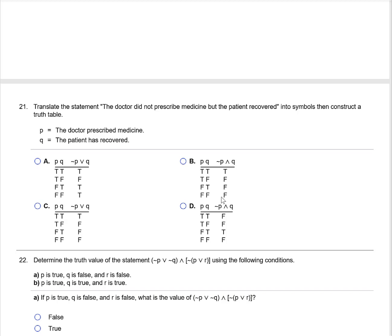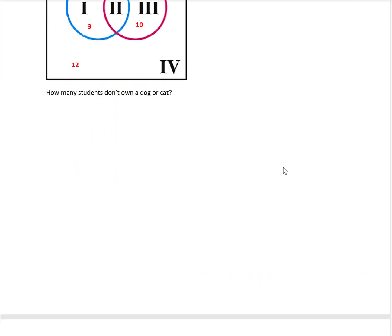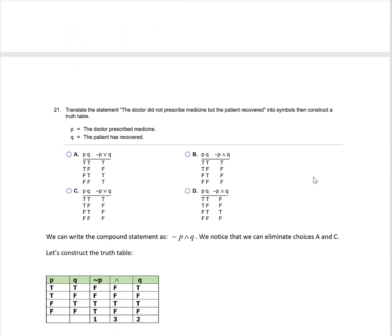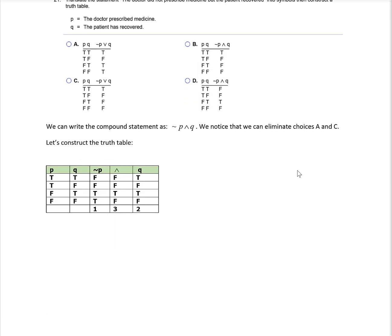Translate the statement 'The doctor did not prescribe medicine, but the patient recovered' into symbols, then construct a truth table. In symbolic form: not P and Q — not P because the doctor did not prescribe, and Q because the patient recovered. I put down my P's and Q's, bring over the negation of P in column one and Q in column two. The connective is 'and', so I look for two true statements, which is case three. The correct answer is choice D.